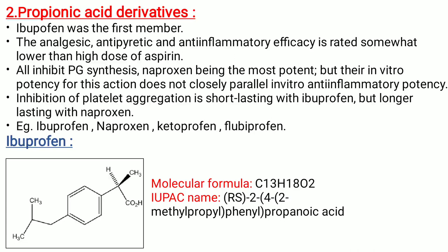Second is propionic acid derivatives. Ibuprofen was the first member. The analgesic, antipyretic, and anti-inflammatory efficacy is rated somewhat lower than high doses of aspirin. All inhibit prostaglandin synthesis — naproxen being the most potent — but their in-vitro potency for this action does not closely parallel in-vivo inflammatory potency. Inhibition of platelet aggregation is short-lasting with ibuprofen but longer-lasting with naproxen. Examples are ibuprofen, naproxen, ketoprofen, and flurbiprofen. The molecular formula of ibuprofen is C13H18O2, and its IUPAC name is RS-2-(4-(2-methylpropyl)phenyl)propionic acid.